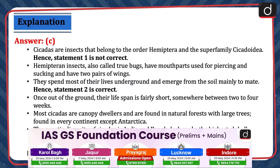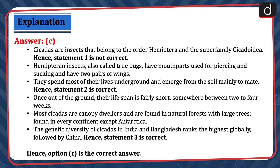Cicadas are insects (not mammals) that belong to the order Hemiptera and the superfamily Cicadoidea — hence statement one is not correct. Hemipteran insects, also called true bugs, have mouthparts used for piercing and sucking and have two pairs of wings. They spend most of their lives underground and emerge from the soil mainly to mate — hence statement two is correct. Once above ground, their lifespan is fairly short, between two to four weeks. Most Cicadas are canopy dwellers found in natural forests on every continent except Antarctica. The genetic diversity of Cicadas in India and Bangladesh ranks the highest globally, followed by China — hence statement three is correct. Therefore, option C is the correct answer.